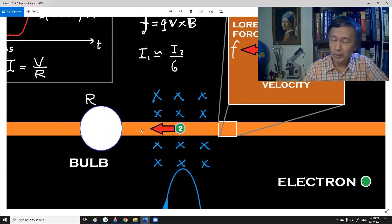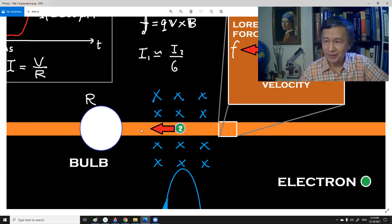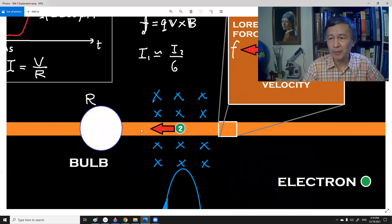When the current moves across the bulb, work is done. Therefore, to some degree, you can argue that the electric bulb is on.